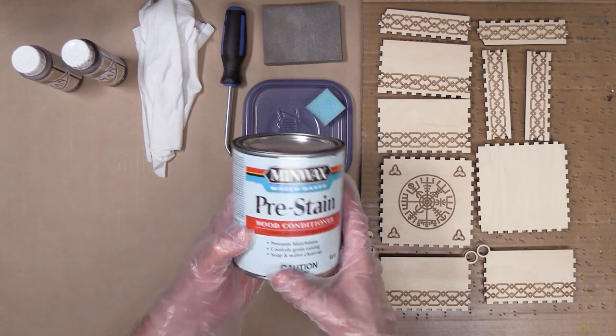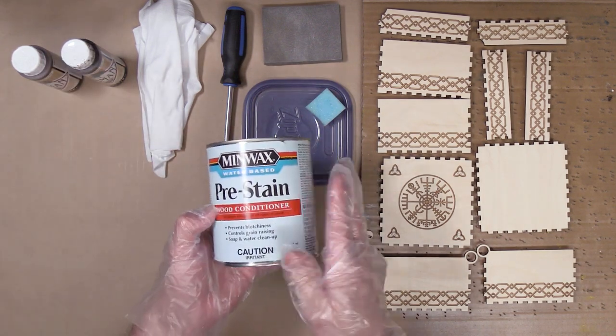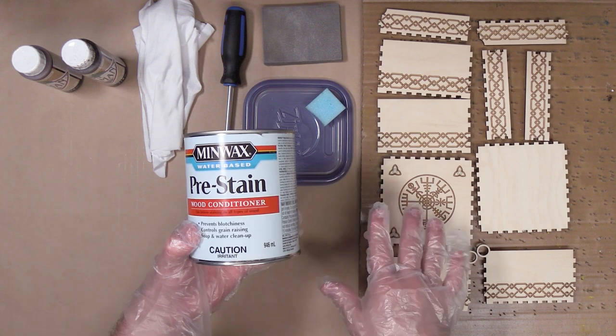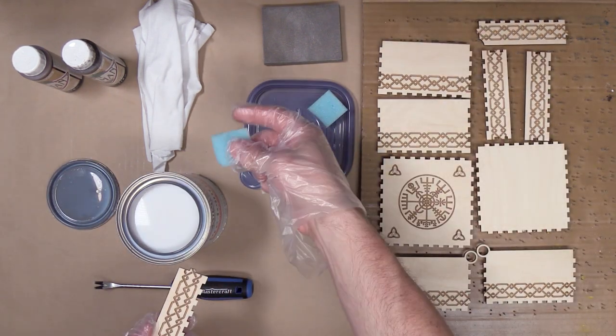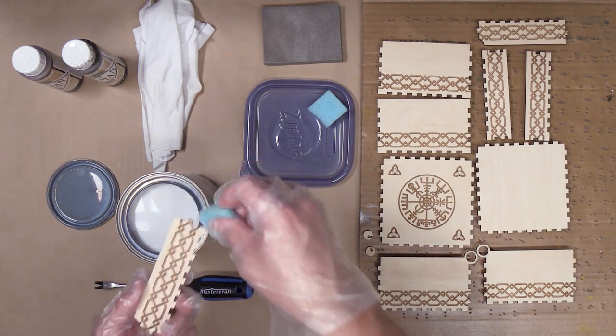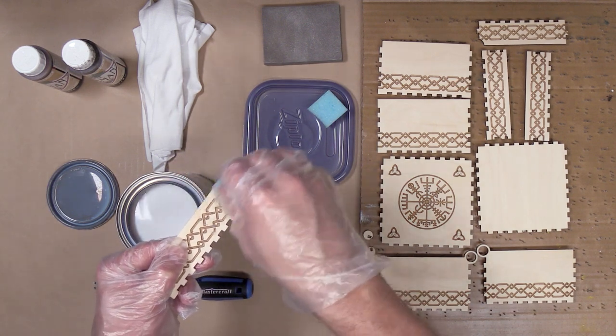Obviously if you're going to use an oil-based stain on your box you will want to get an oil-based pre-stain. I'm just going to go ahead and apply a coat of this to each side of each piece with a small piece of sponge and then I'm going to let it dry. After it's dry we'll be back and we'll start the staining process.